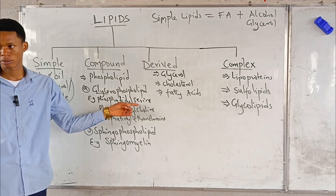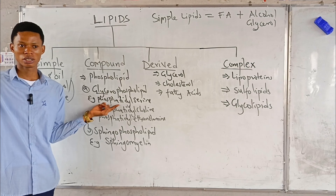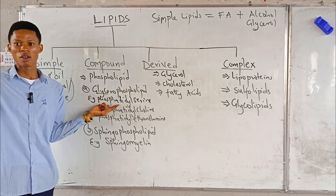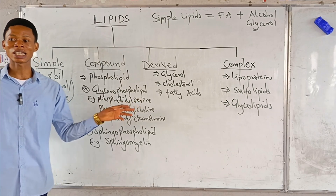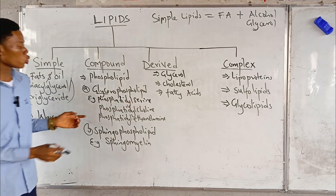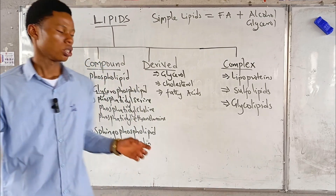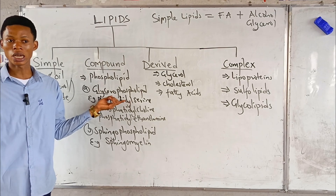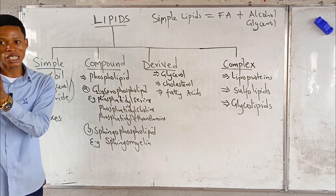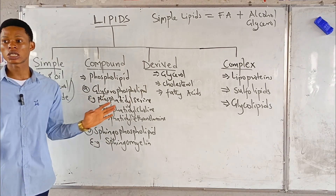The components of phosphatidylserine are: phosphate group, fatty acid, glycerol as the alcohol, and serine — which is attached to the phosphate. So if you are asked to give examples of phospholipids, it's phosphatidyl-something: phosphatidylcholine, phosphatidylserine. Just know that 'phosphatidyl' is there, then you add something. An example of a sphingophospholipid is sphingomyelin.